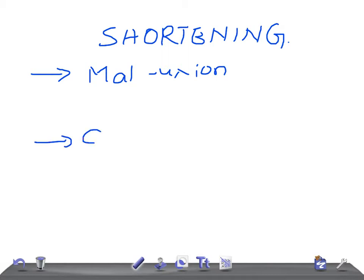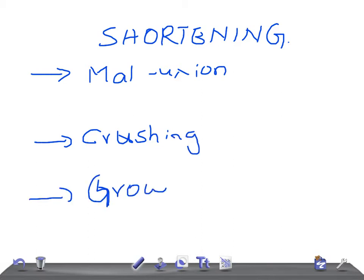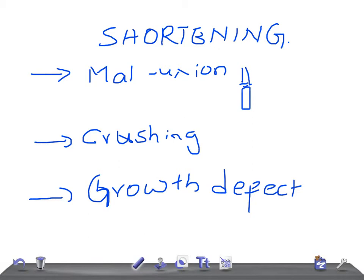The three causes are: malunion, crushing, and growth defect. In malunion, the fracture unites with an overlap or marked angulation. Instead of uniting straight, the bone unites at an angle, and thus results in a shortened bone.